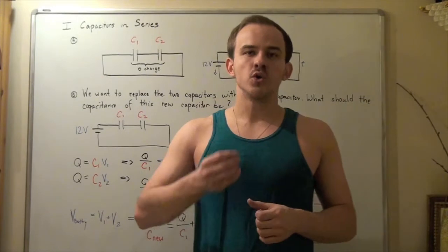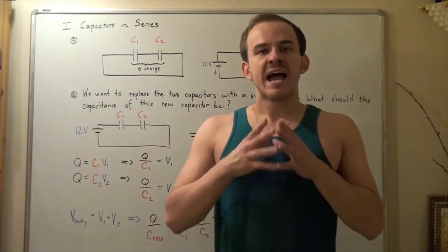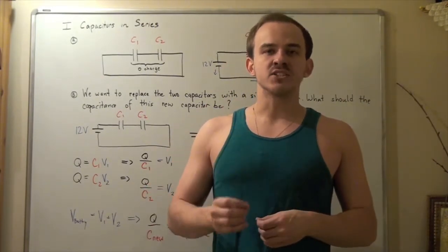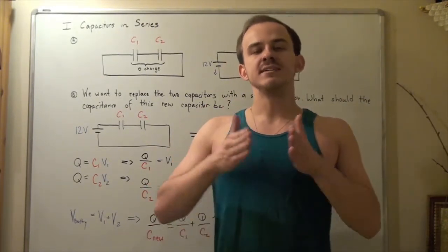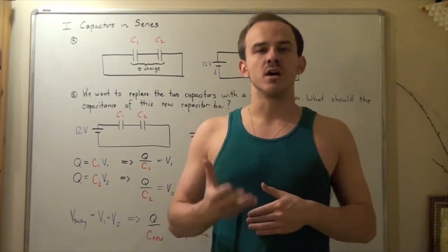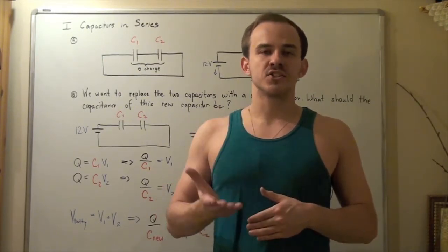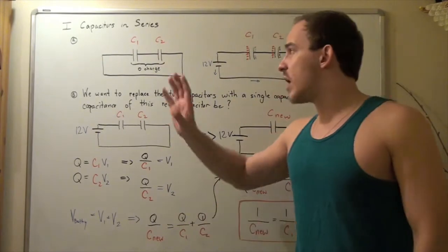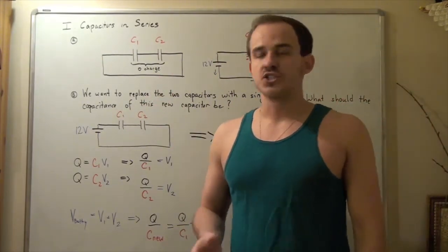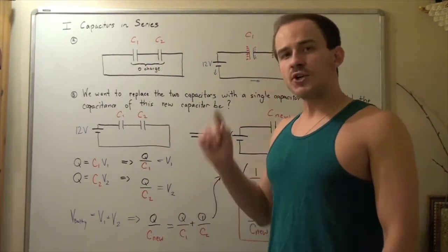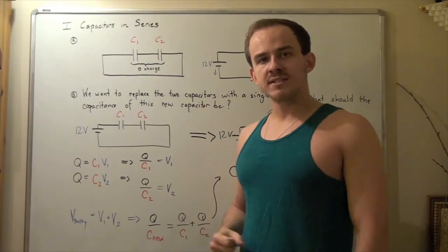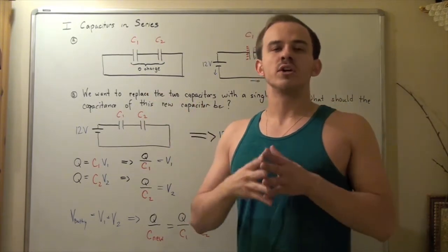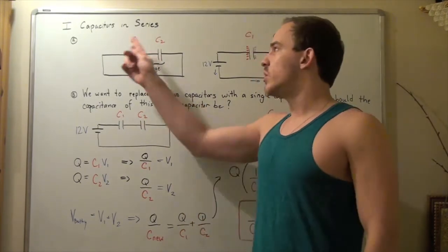In this lecture, we're going to examine how to combine our capacitors when capacitors are placed in series or adjacent to one another in our electric circuit. To begin, let's look at the following two electric circuits. In electric circuit number one, we have two capacitors, C1 and C2, placed in series or adjacent to one another.